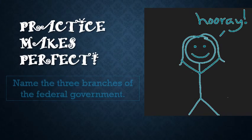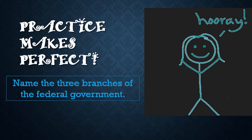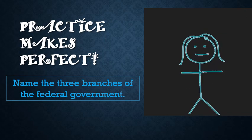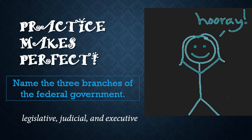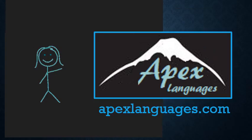Practice makes perfect. Name the three branches of the federal government — one last time, let's make sure you got all three of them. They are the legislative, judicial, and executive branches. Got all that? Good. Thank you, as always, for watching. Check out more videos at apexlanguages.com. And until I see you next time, have a wonderful, healthy, safe rest of your day.